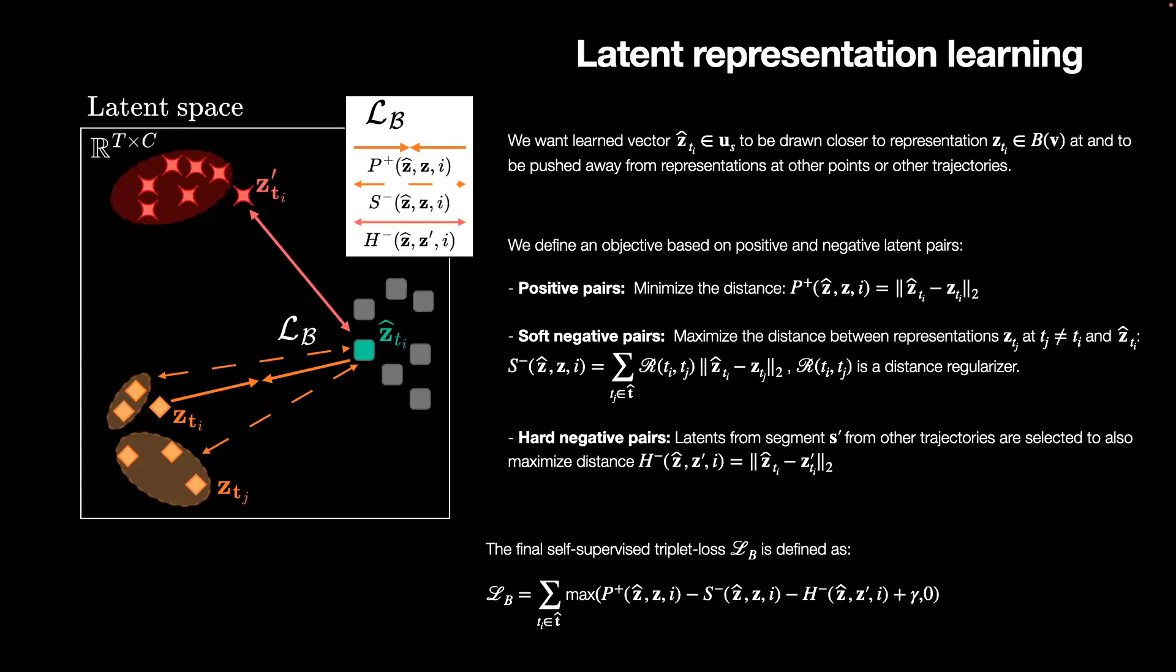We define positive pairs between the encodings from the trajectory at the temporal locations and the corresponding latents. Soft-negatives are defined from segment encodings at different temporal locations, regularized based on the temporal distance to the learned latents. Hard-negative pairs are defined from encodings of segments from different trajectories. The encoder is trained with the final self-supervised triple loss with a combination of positive pairs, soft-negative pairs, and hard-negative pairs.